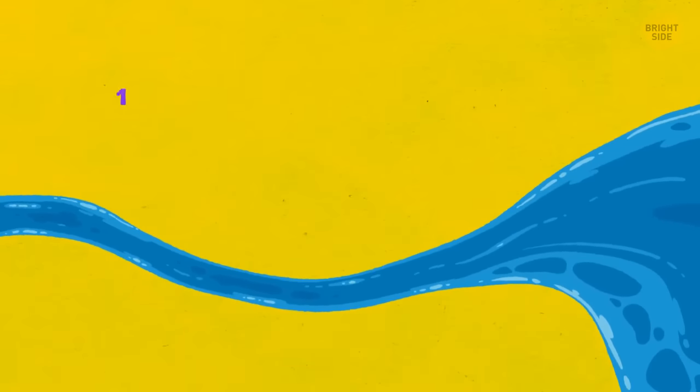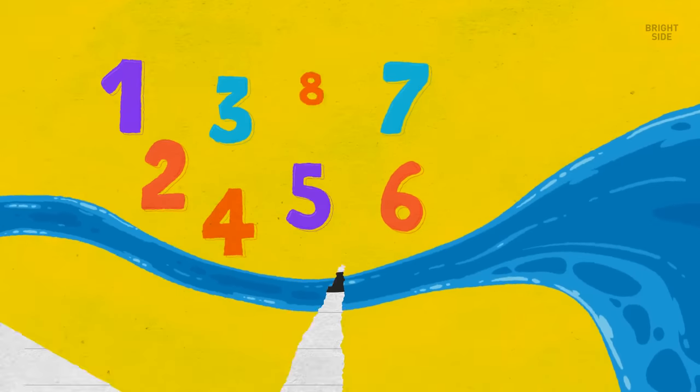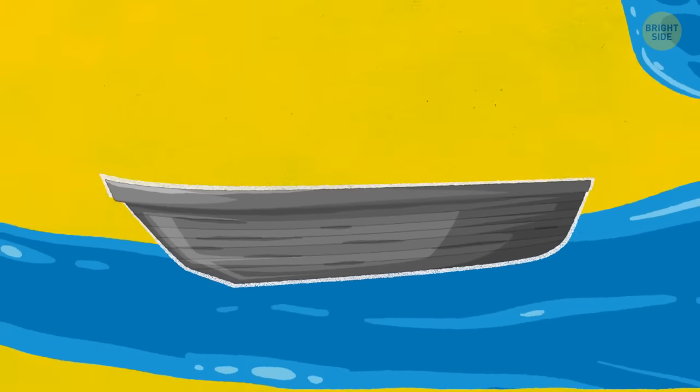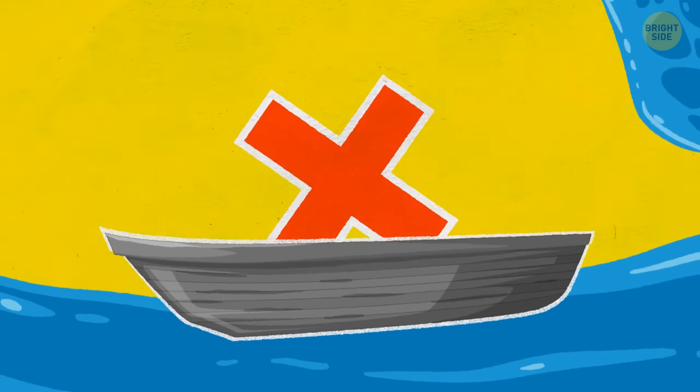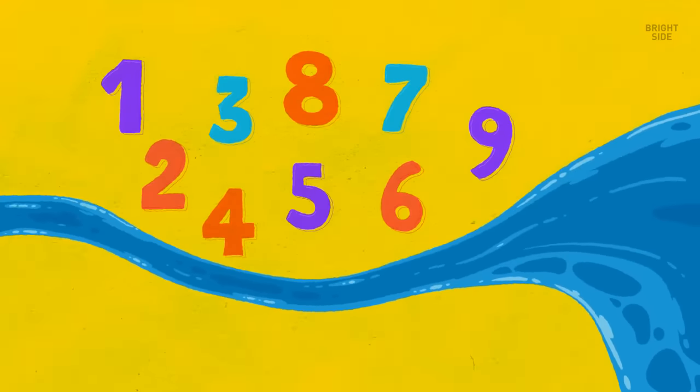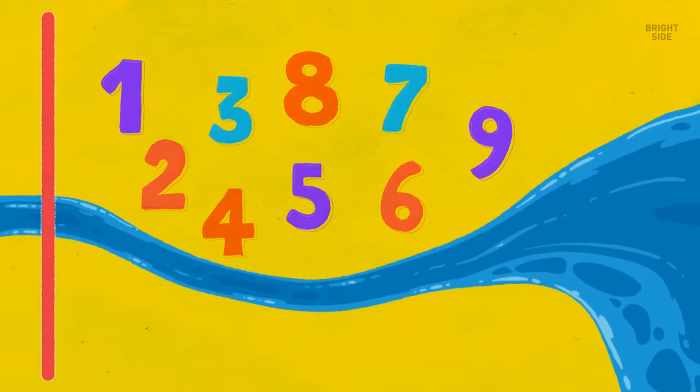In the land of riddles, nine numbers from one to nine want to cross a river. There is a boat, but it can't carry more than three numbers at a time. Plus, the sum of the traveling numbers has to be a square number, and the boat can't move on its own. How many trips will be needed for all the numbers to cross the river?